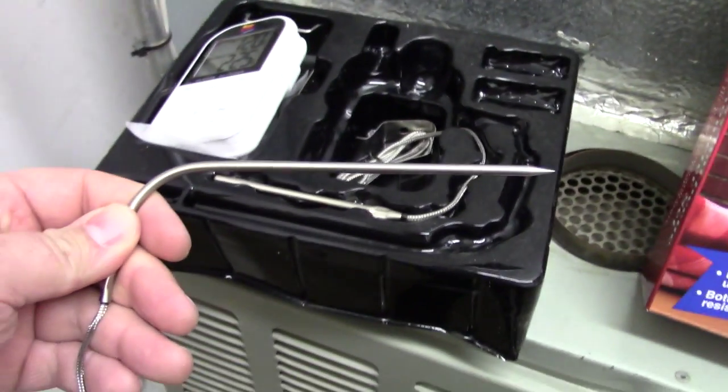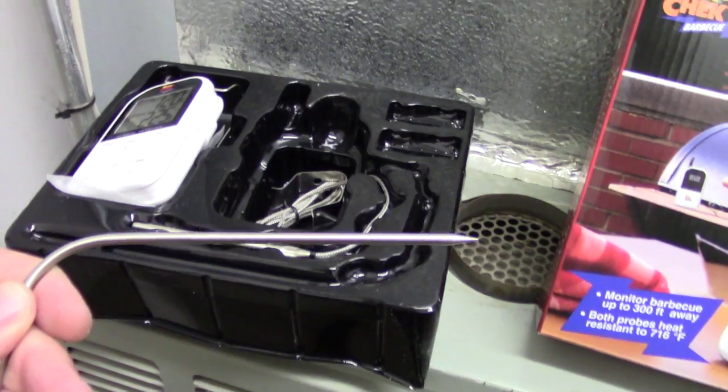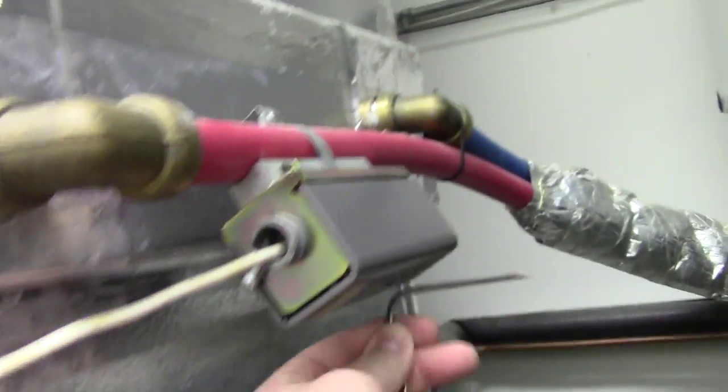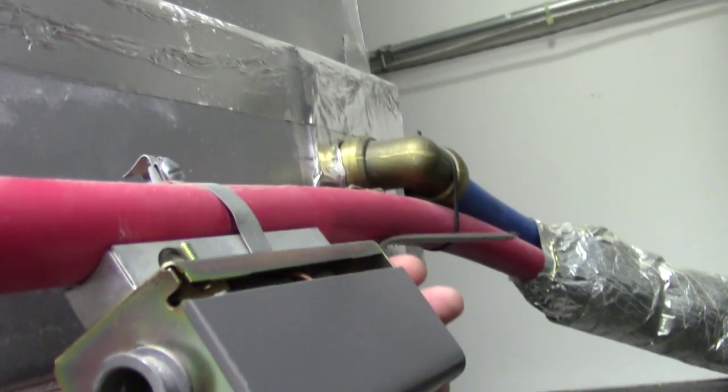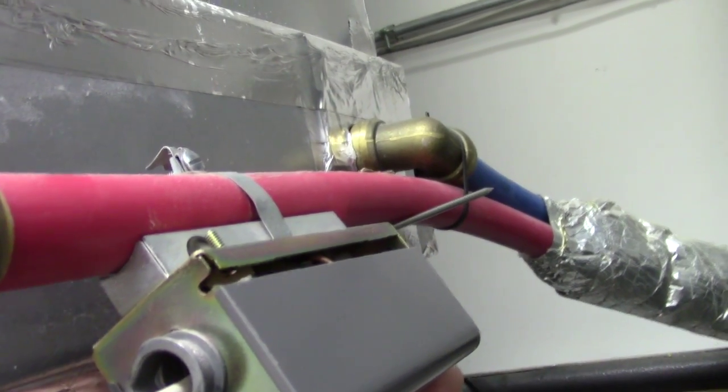So what I'm going to do, I'm going to take these meat probes. They don't have to be just for barbecuing. I'm going to take some electrical tape and just tape the probe right to this PEX line.